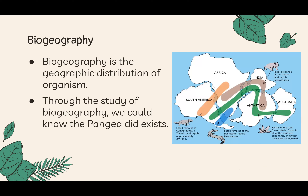How does biogeography relate to biodiversity and evolution? We can see the geographic distribution of organisms. On the right picture, there are certain species found in both South America and Africa. The pattern of these species being found on both continents allows us to infer that Pangea did exist. Through biogeography, we understand how biodiversity has distributed across the world.